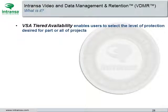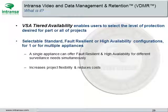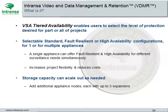VSA Tiered Availability enables users to select the level of protection desired for part or all of a project. It provides selectable standard, fault-resilient, or high-availability configurations for one or multiple appliances. A single appliance can offer fault-resilient and high availability for different surveillance needs simultaneously, increasing project flexibility and reducing costs. Intransa video appliance storage capacity can scale out as needed by adding additional appliance nodes, each with up to three expanders.